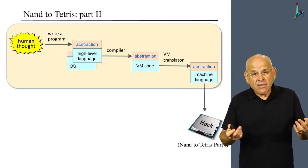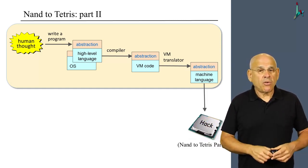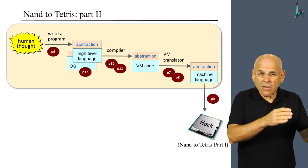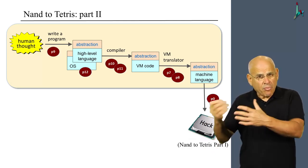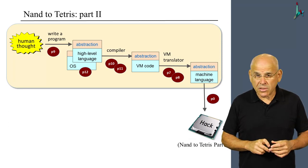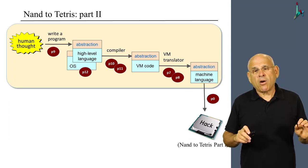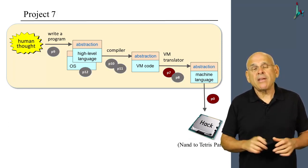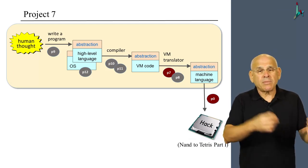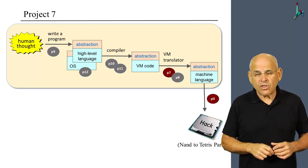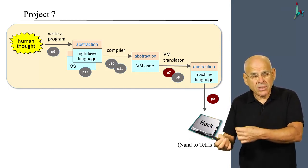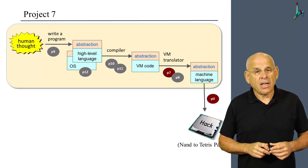We decided to split this overall journey into six standalone projects, numbered project seven all the way up to project 12. We also have project zero, which is optional and was the focus of the first module of the course. In this particular module, we're going to focus on project seven, in which we build the first stage of a full-blown VM translator that can translate programs from VM code to machine language. Project zero is also relevant because we're going to use some tools from it in project seven as well.